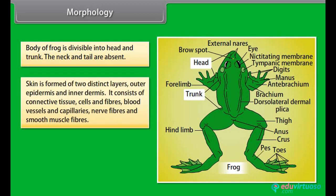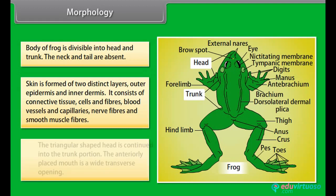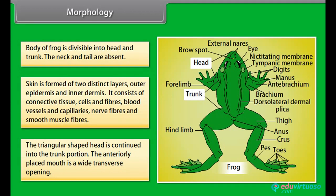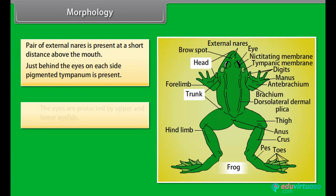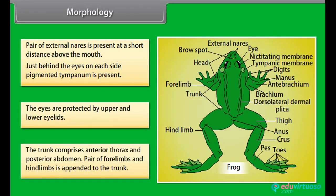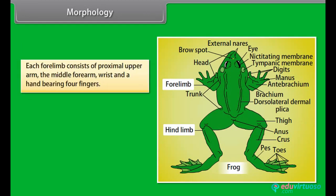The skin is formed of two distinct layers — outer epidermis and inner dermis — consisting of connective tissue cells and fibers, blood vessels and capillaries, nerve fibers and smooth muscle fibers. The triangular shaped head is continued into the trunk portion. The anteriorly placed mouth is a wide transverse opening. A pair of external nares is present at a short distance above the mouth. Just behind the eyes, on each side, a pigmented tympanum is present. The eyes are protected by upper and lower eyelids.